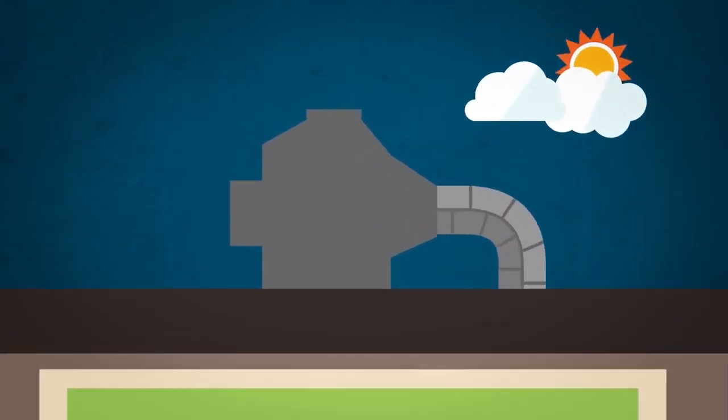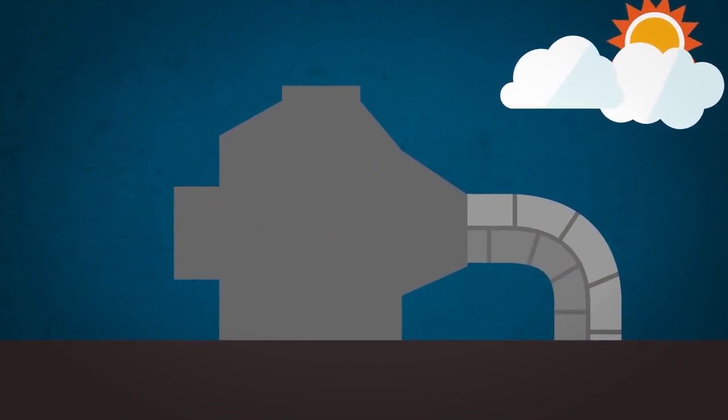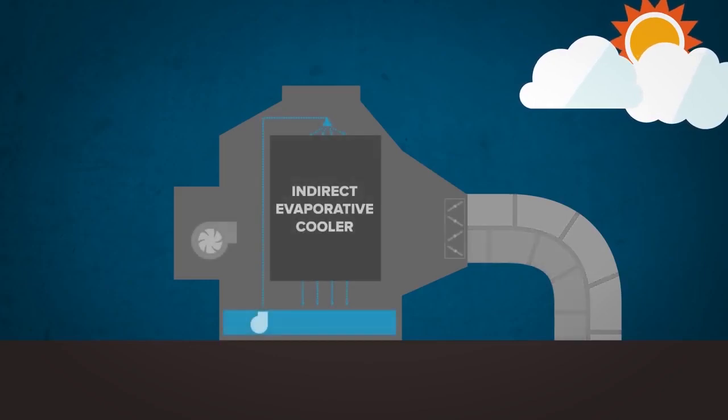Climate Wizard is a standalone technology that delivers 100% cooled ventilation air. It uses significantly less electricity than a standard rooftop air conditioner and adds no humidity to the building. It does this by using an indirect evaporative cooling process.